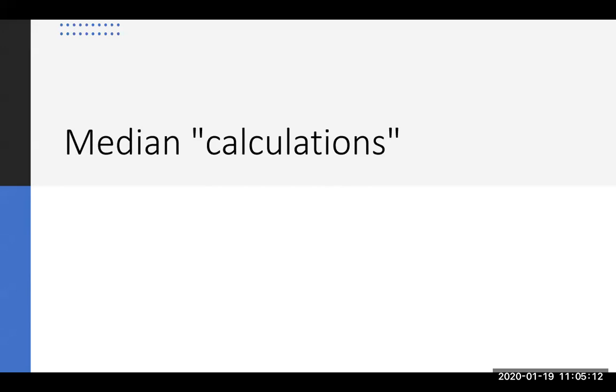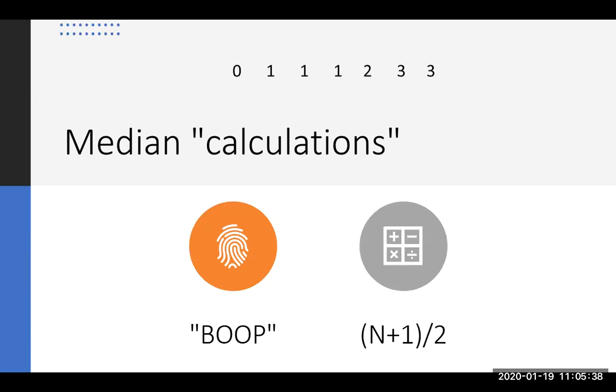So these are, I put in quote calculations because some of them aren't really calculations, but these are the techniques that we would use to calculate the median. I'm going to use these fake data set up there. Let's just say this is dollars in your pocket. So I coined this technique, the BOOP technique. It's an easy way if you have a very small data set to kind of visualize where the median is. And then we're going to learn the math technique, which is saying N plus one divided by two. So this is the mathematical technique for calculating where the median would be.